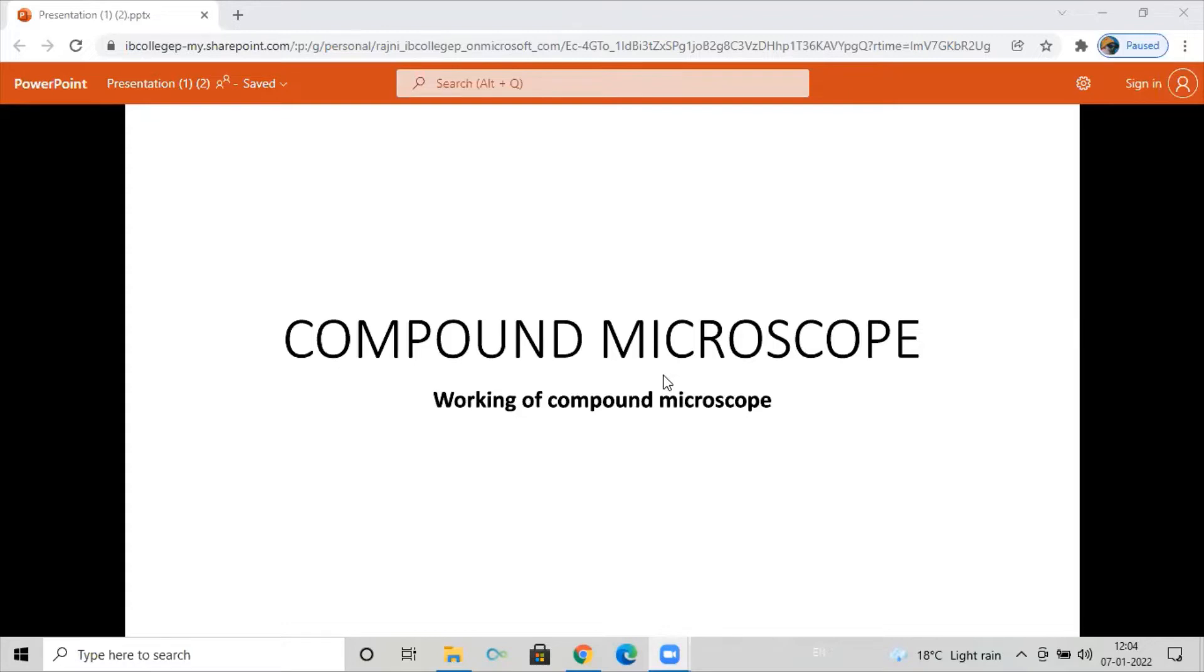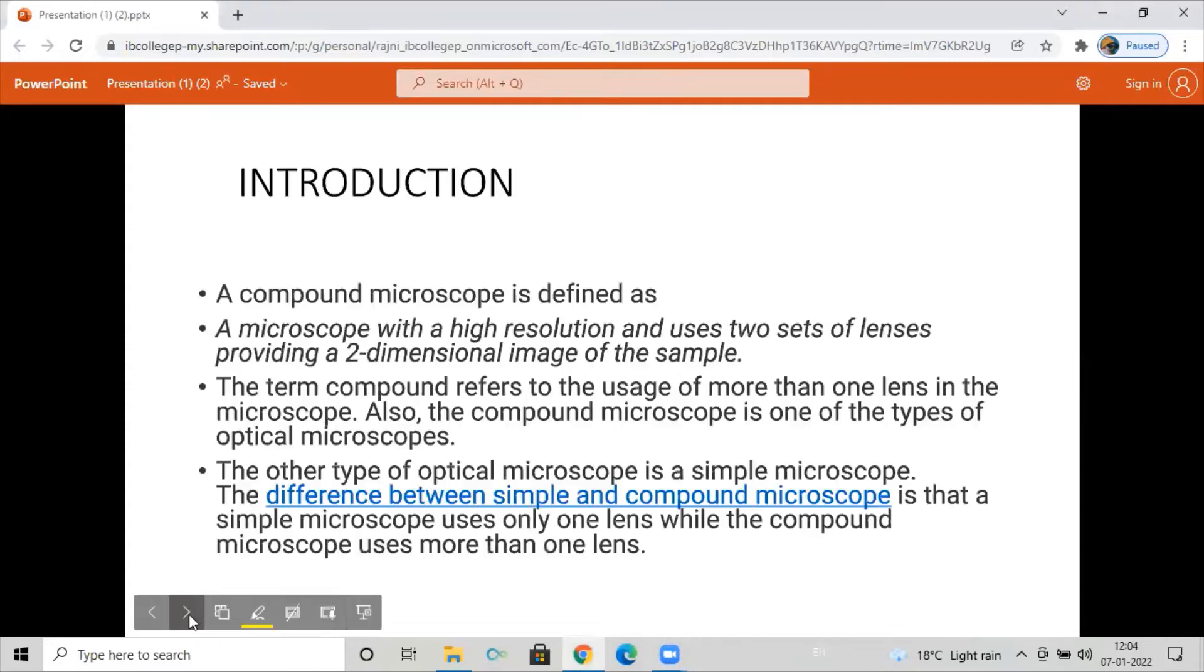Hello everyone, in today's video we will learn about working of compound microscope with its parts explained. First, introduction: a compound microscope is defined as a microscope with a high resolution that uses two sets of lenses providing a two-dimensional image of the sample.